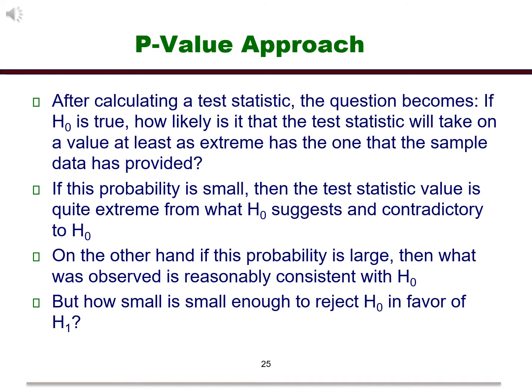Besides the rejection region method, we could also use the p-value method to make our decision. This is the more popular method, most likely because all statistical packages yield p-values for hypothesis tests. After calculating a test statistic, the question becomes, if the null is true, how likely is it that the test statistic would take on a value at least as extreme as the one that the sample data has provided? If this probability is small, then the test statistic value is quite extreme from what the null suggests in contradictory to the null. On the other hand, if this probability is large, then what was observed is reasonably consistent with the null. But how small is small enough to reject in favor of the alternative?